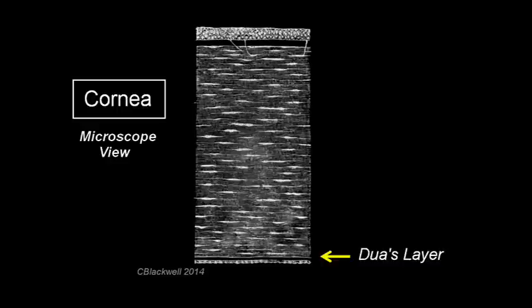Last spring, a new layer was described called Dua's layer, a dense layer of collagen just on top of Decime's layer. Kind of an event when a new piece of anatomy comes along.